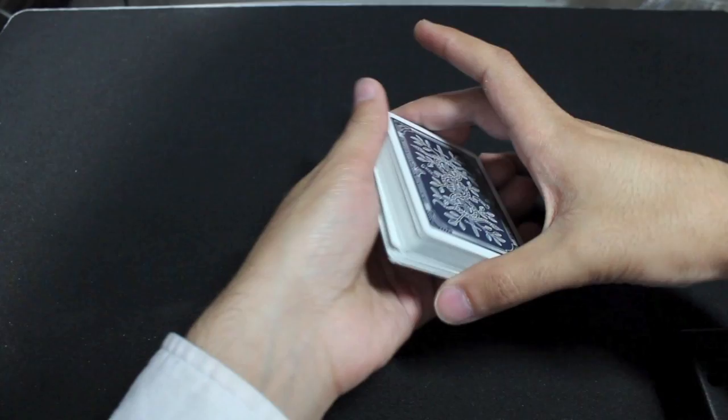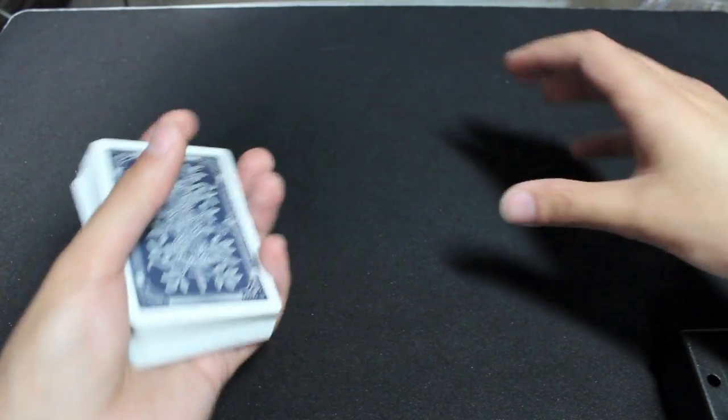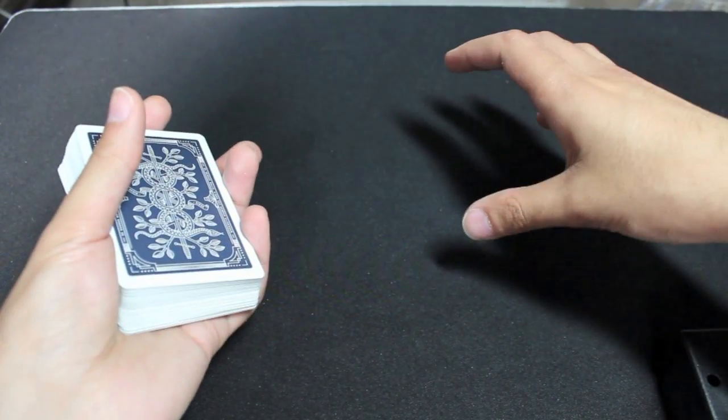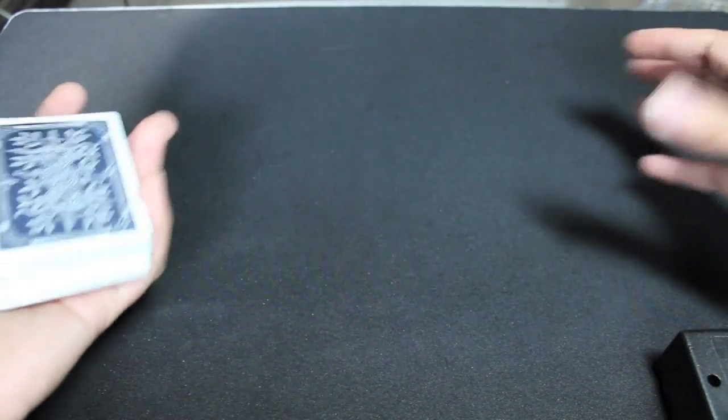What happens is you take out four random cards from the deck and then in one quick sudden movement those four cards change into the four aces.